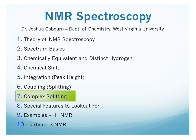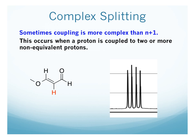Now that you have an understanding of how and why splitting occurs in the signals on an NMR spectrum, we're going to take a look at some slightly more complex splitting patterns. We're just going to look at the very basics of complex splitting, and it can get much more complex than these examples. But to start, let's take a look at this alkene proton — protons on alkenes tend to give complex splitting patterns, and we're going to see why.